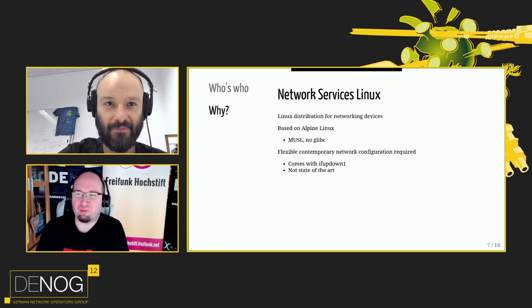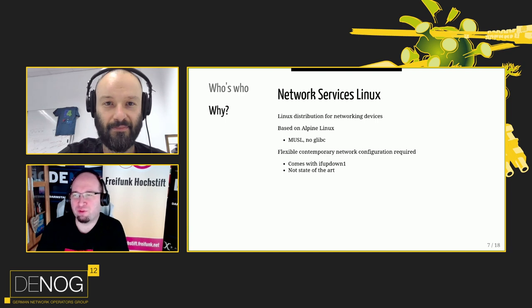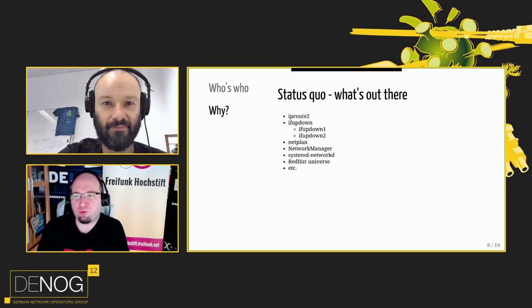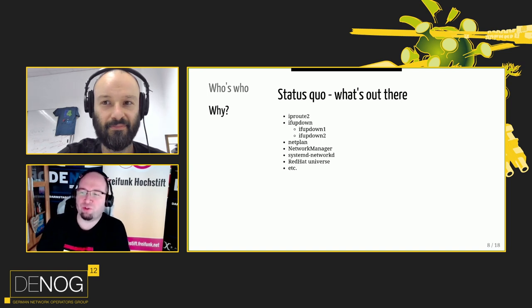We built, or tried to build, a distribution for network services Linux, which is based on Alpine. That's why we came into the sphere of configuring network interfaces on a Linux distro. Alpine Linux has something not quite common: it has no standard glibc, it has musl. Before version 3.13 it came with classical ifupdown one, which some people may know from Debian, and which is not state of the art today. When we were unhappy we looked at what is out there: you have the option to use ip route manually, ifupdown one or two, netland, NetworkManager, etc. There is a large universe for network configuration.